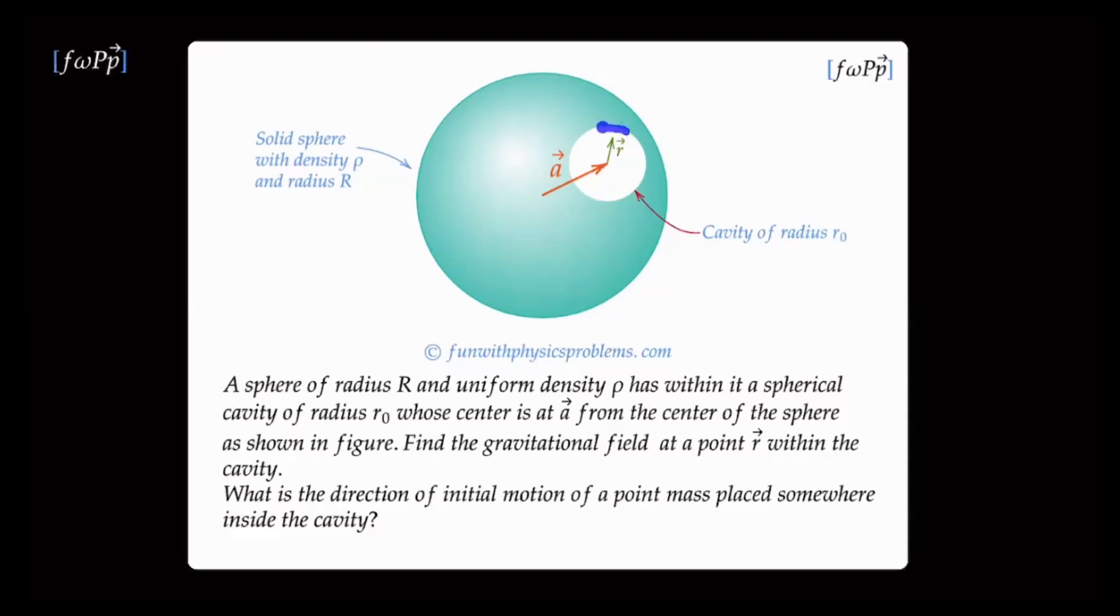In this problem, there is a cavity of radius r0 inside a solid sphere that has a uniform density ρ and radius R. If you take a point inside that cavity at a position vector small r, then the point of the problem is to figure out what is the gravitational field at the point r.